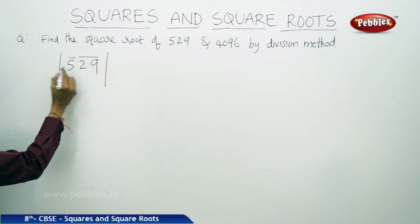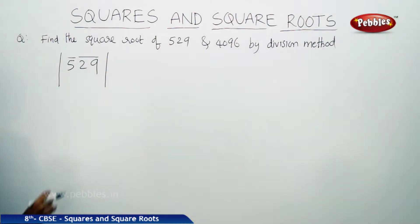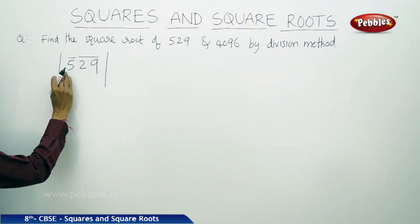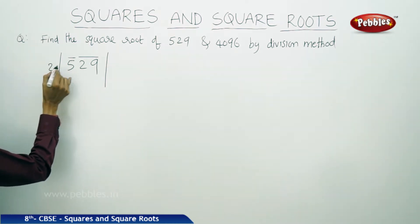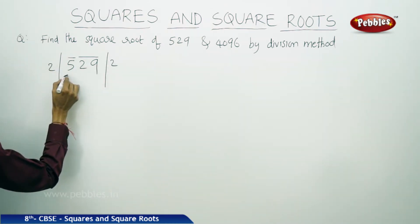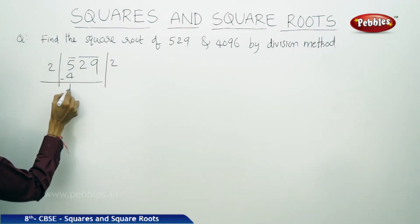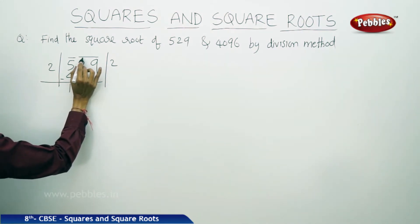First you take 5. Is 5 a perfect square? Obviously it is not a perfect square. Then what is the largest perfect square which is smaller than 5? That is 4. So 4 is the largest perfect square smaller than 5. What is the square root of 4? It is 2. So you take 2, and 2 twos are 4. Now subtract 5 minus 4, that is 1. Now carry the two digits which are under this bar: 29.